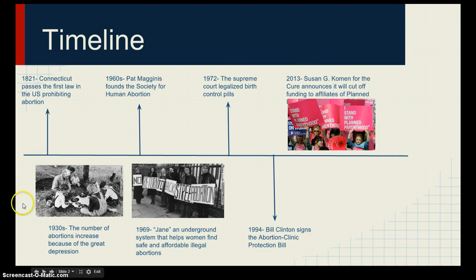Right here I have a picture of a family from the Depression. They're in very poor conditions; they don't have enough money to support a child. Pat Magans founded the Society for Human Abortion. In 1969, Jane was an underground system that helped women find safe and affordable illegal abortions.